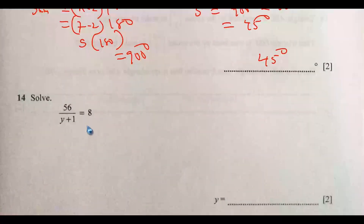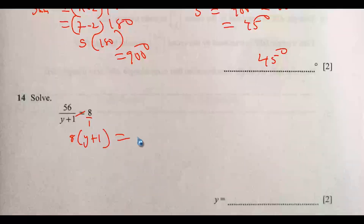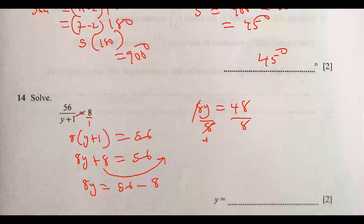Question 14: Solve 56 divided by (y plus 1) equals 8. Cross-multiplying gives 8 times (y plus 1) equals 56. Expanding: 8y plus 8 equals 56. So 8y equals 56 minus 8, which is 48. Dividing both sides by 8 gives y equals 6, since 6 times 8 equals 48.